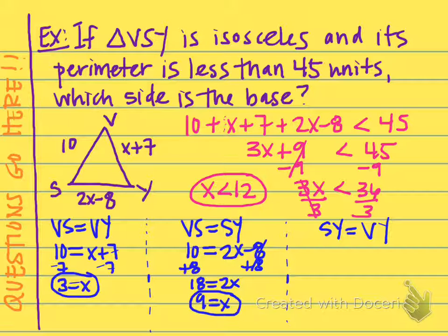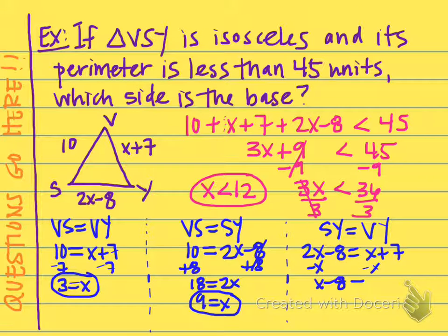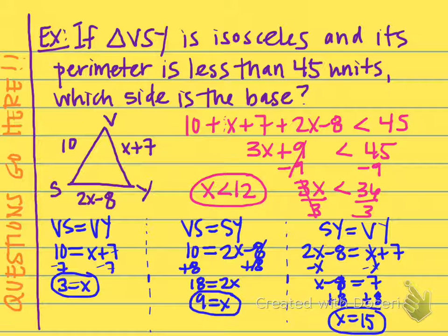The third scenario could be that SY and VY are the two sides that are congruent: 2x minus 8 equals x plus 7. To solve this, subtract x from both sides to get x minus 8 equals 7, then add 8 to both sides to get x equals 15. We learned from our inequality that x must be less than 12, so this scenario is not going to work out for us.